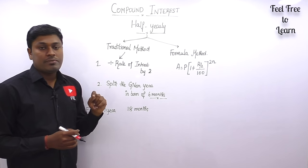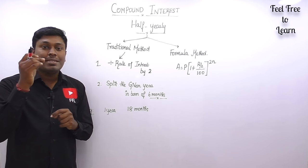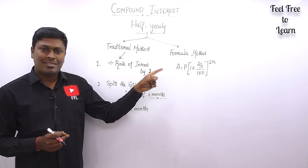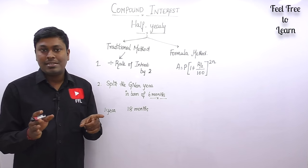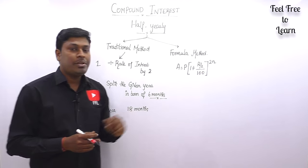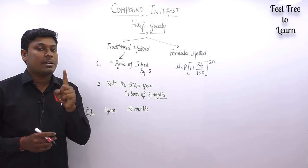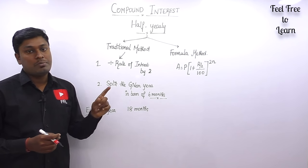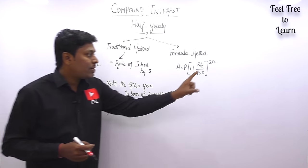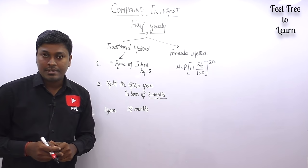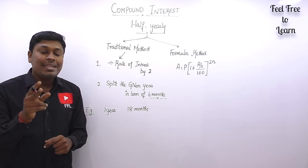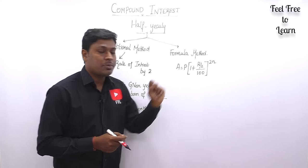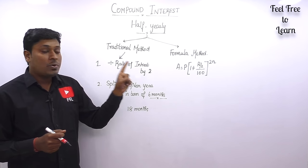For compound half-yearly, the formula changes to A = P × (1 + r/2 ÷ 100)^(2n), where r denotes the rate of interest. The small changes in the formula are: r becomes r/2, and n becomes 2n. Here n should always be in terms of number of years. If n = 2 years, substitute 2; that becomes power 4.